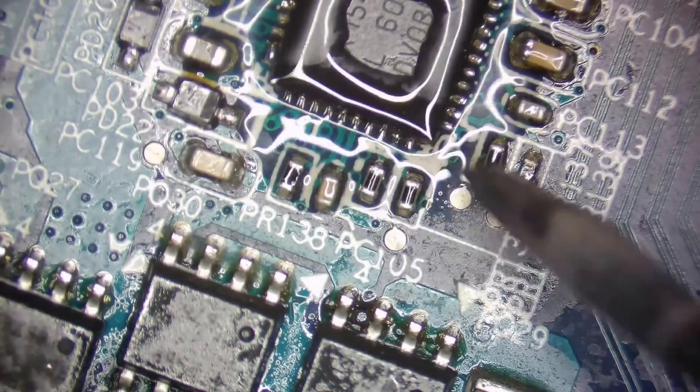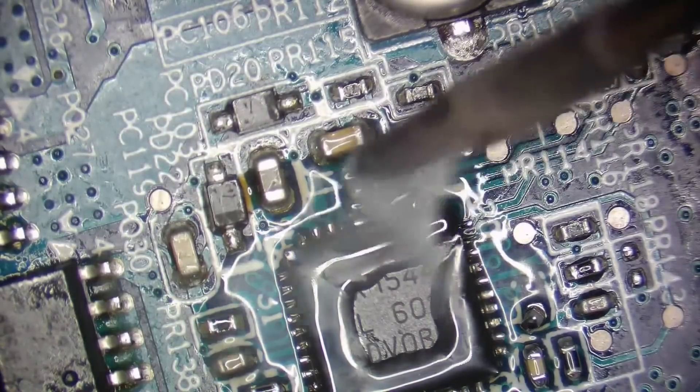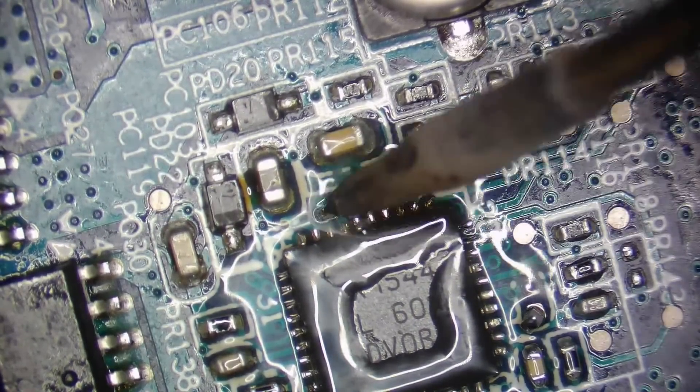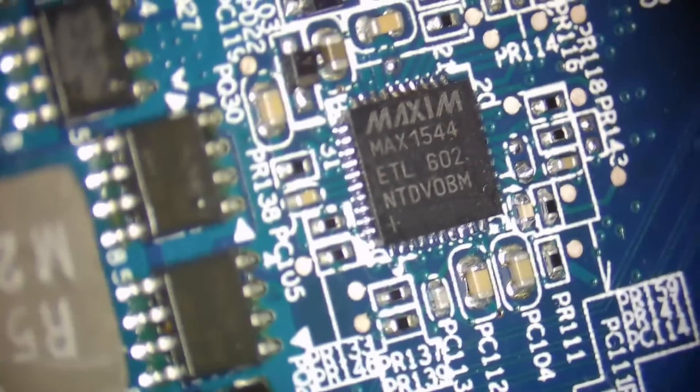Then remove any solder bridges and clean the board with isopropyl alcohol and a brush. To finish the job, just inspect the solder joints by looking at an angle - that's how they're supposed to look.